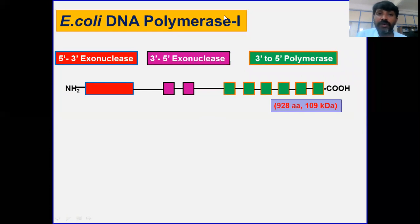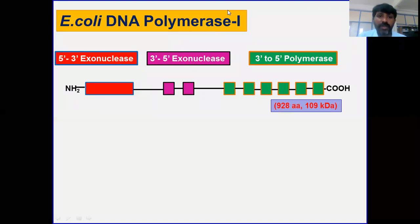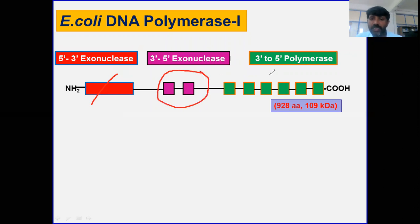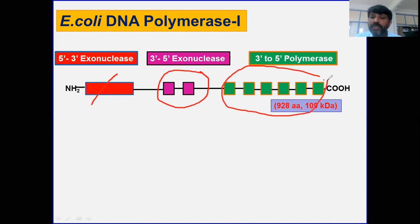Looking at the organization of E. coli DNA Polymerase I: at the N-terminal region there is the 5' to 3' exonuclease activity. Moving toward the C-terminal, there is the 3' to 5' exonuclease activity, and at the far C-terminal end there is the 5' to 3' polymerase activity.